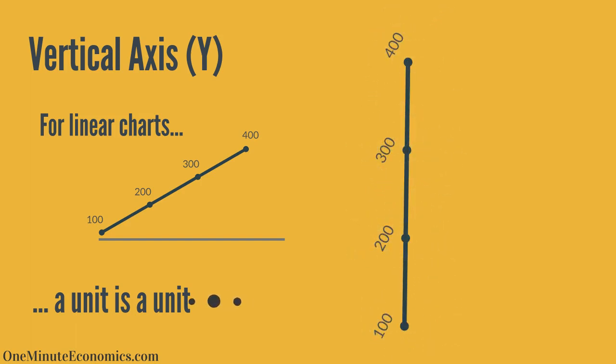For example, on a linear chart, the distance from 100 to 200 cases is represented the same way as the distance between 200 and 300 cases, because in each situation we're talking about an additional 100 units or cases.